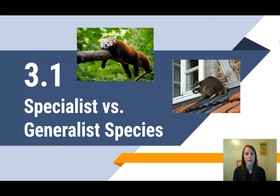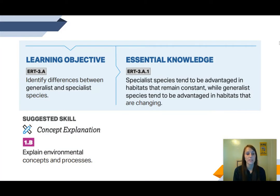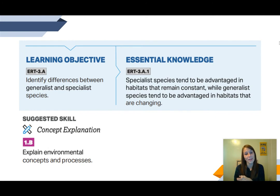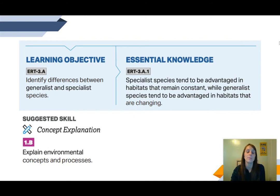Hey everyone, it's Ms. Seward. Today we're going to be learning about section 3.1, which is on specialist versus generalist species. The learning objective for today is that you can identify differences between generalist and specialist species. The essential knowledge you're going to be gaining is what specialist and generalist species are, how you can tell the difference, and some of the advantages and disadvantages that each has. The suggested skill you're going to gain is practicing the ability to explain environmental concepts and processes.